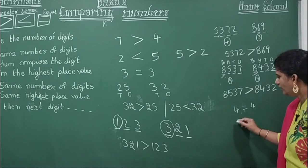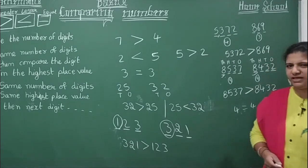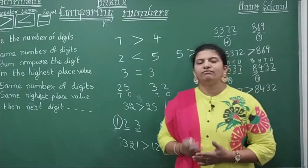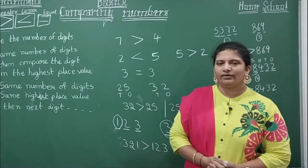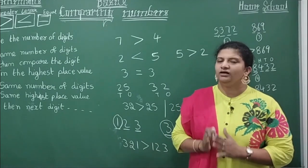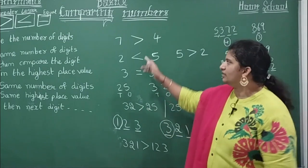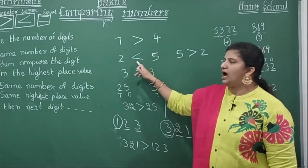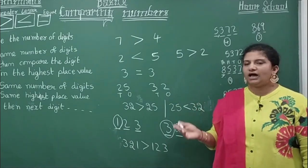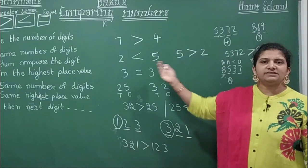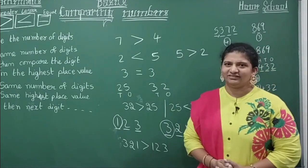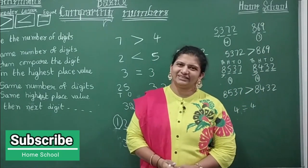When are two numbers equal? When both numbers have the same value — for example, four equal to four. We use the equal to symbol. I hope you all have understood greater than, less than, and equal to. If you know these two symbols, whichever symbol your teacher asks you to use, you can do it. First compare the numbers in your mind, then write the answer. Thank you, children! Please subscribe.